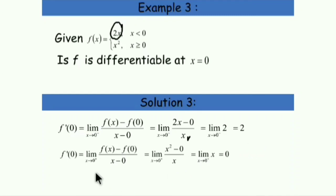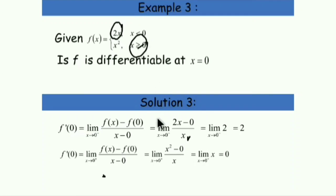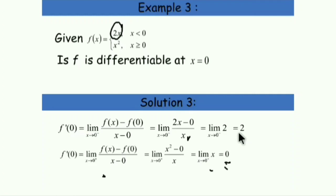Similarly, now we check the limit as x approaches 0 from the right. For x greater than or equal to 0, the function is x squared. We apply the same formula: [x squared minus f(0)] over [x minus 0], and evaluate the limit. The answer is 0.